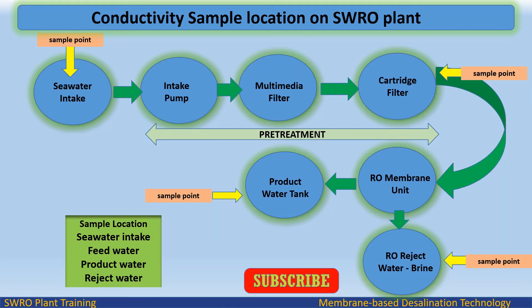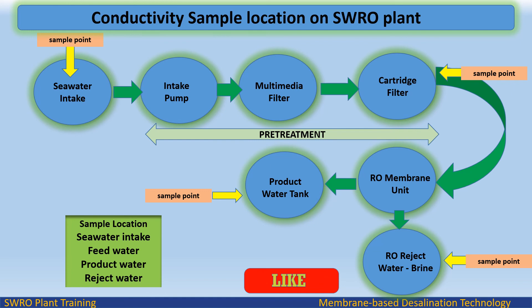Conductivity sample locations on an SWRO plant: sample locations are seawater intake, feed water, product water, and reject water.